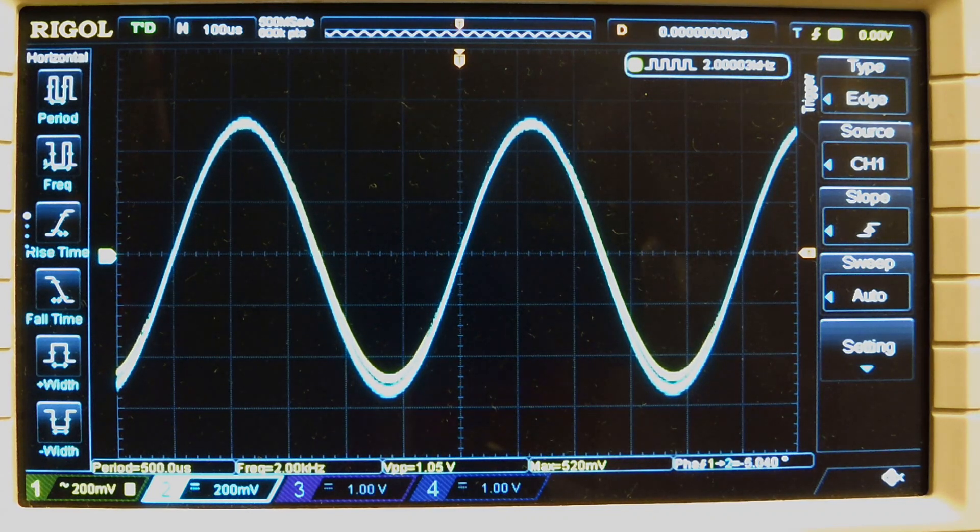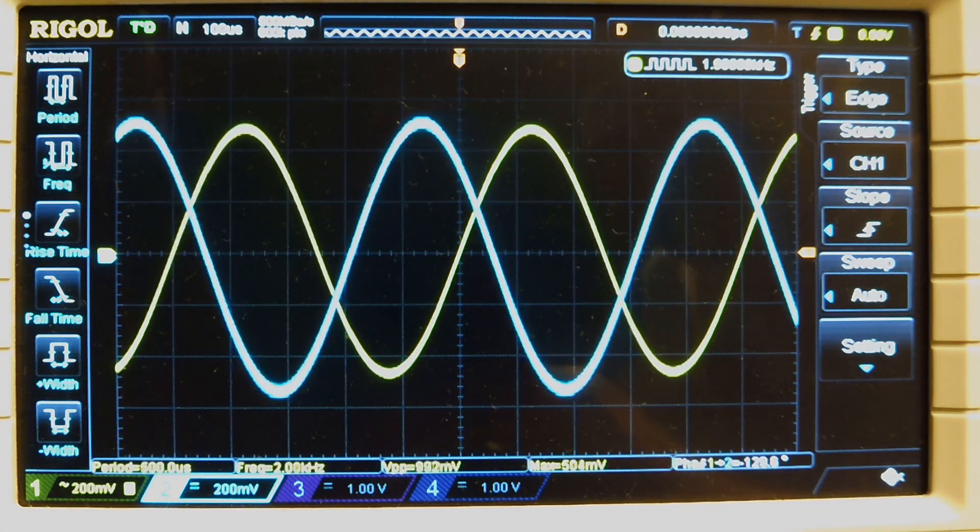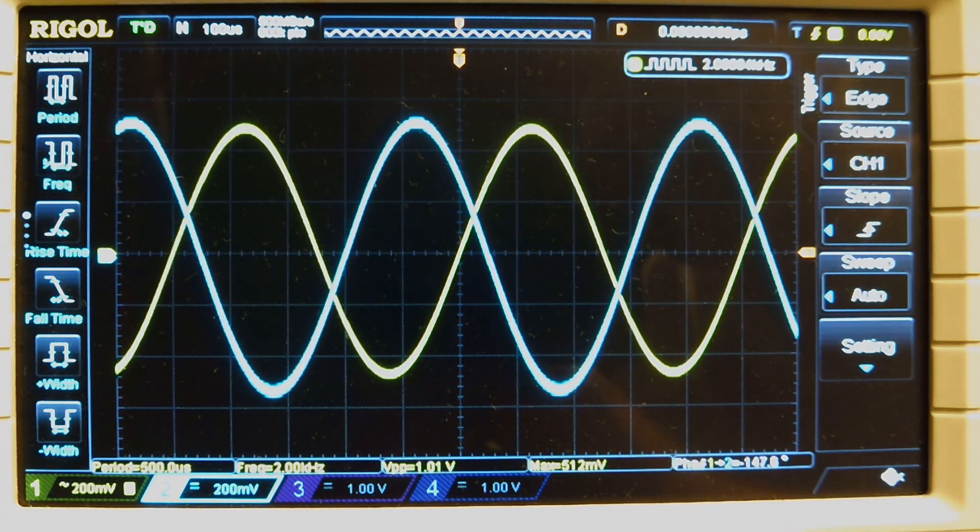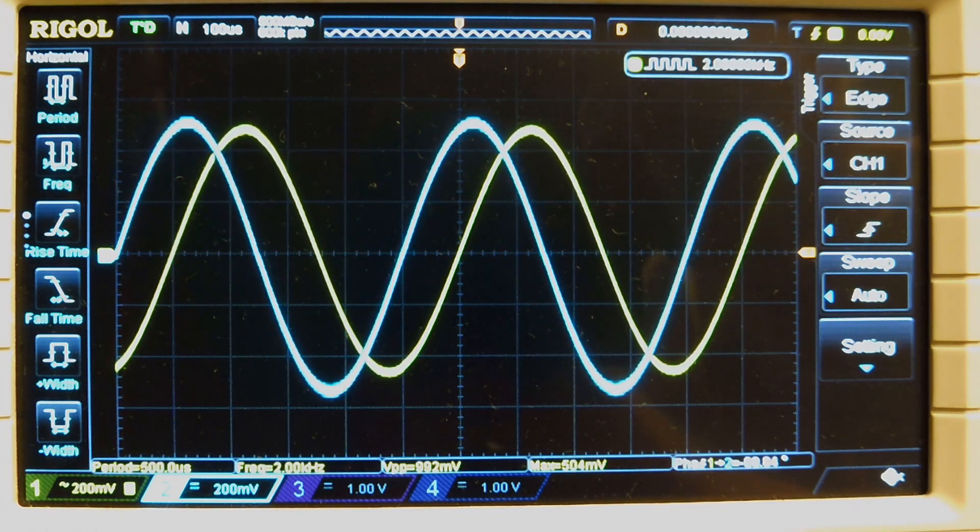You can see on my scope I have two channels set up. One channel is monitoring the input to my phase shifter, another channel is monitoring the output. If I turn the potentiometer on my circuit board I can actually change the phase difference between the two signals. I have total control from zero degrees all the way up to 180 degrees, total control of the phase angle with my potentiometer.